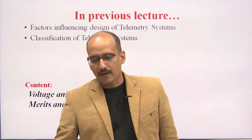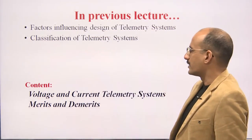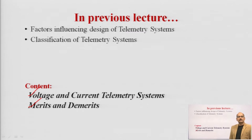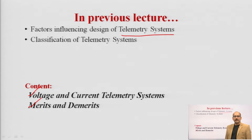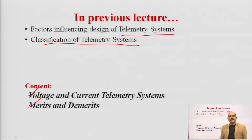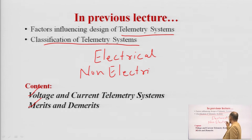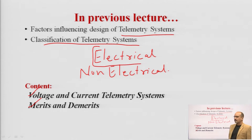Jai Hindi students. Today we are going towards the next part of the telemetry system — voltage and current telemetry — and the merits and demerits of the voltage and current telemetry system. In the last class we studied the meaning, definition, and classification of telemetry. The classification covers two types: electrical and non-electrical telemetry systems. Today's lecture focuses on the electrical telemetry system, specifically the voltage and current telemetry system.